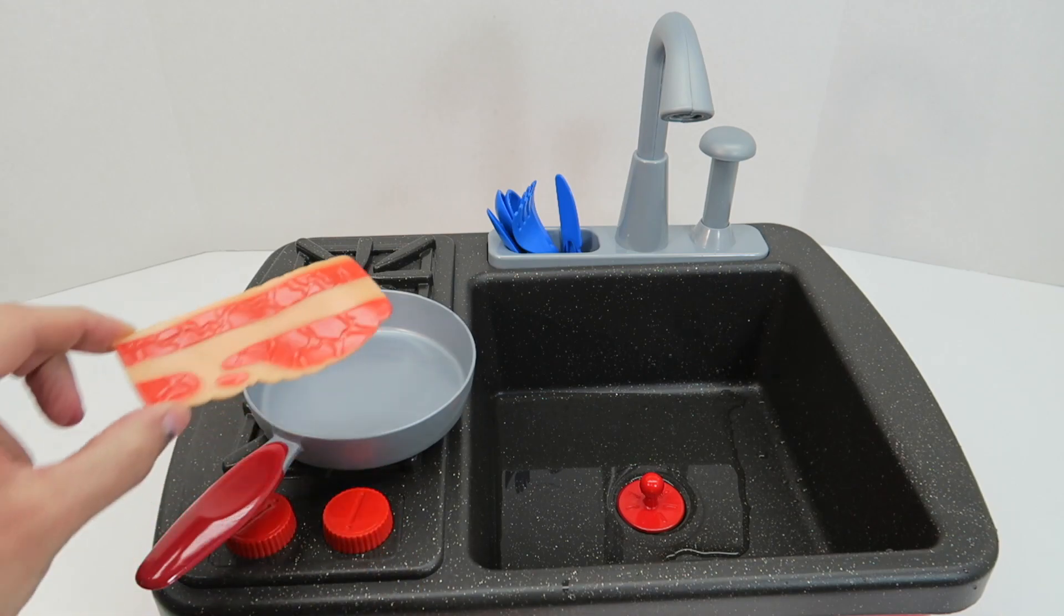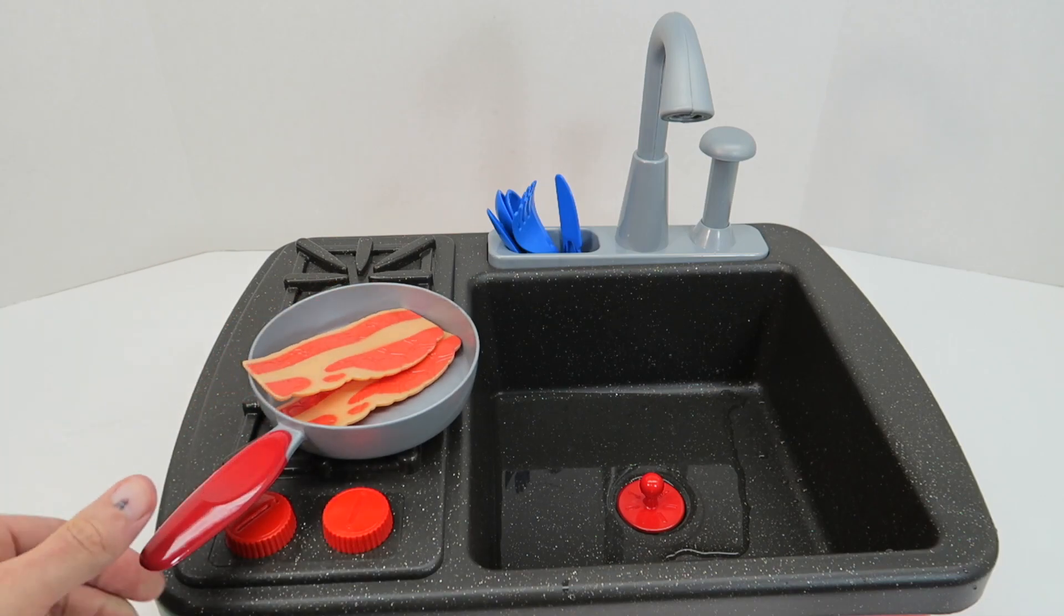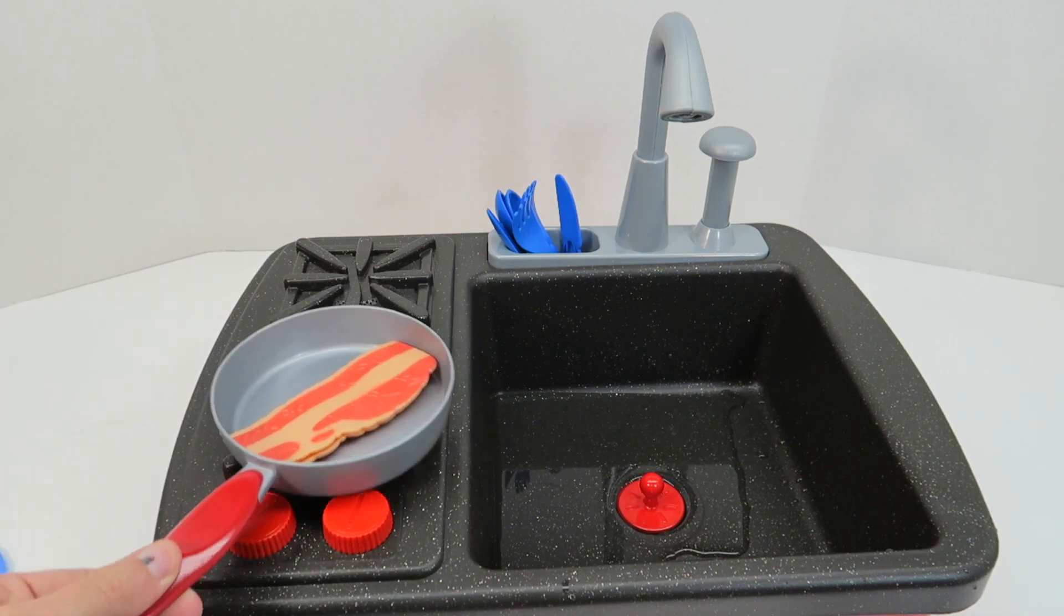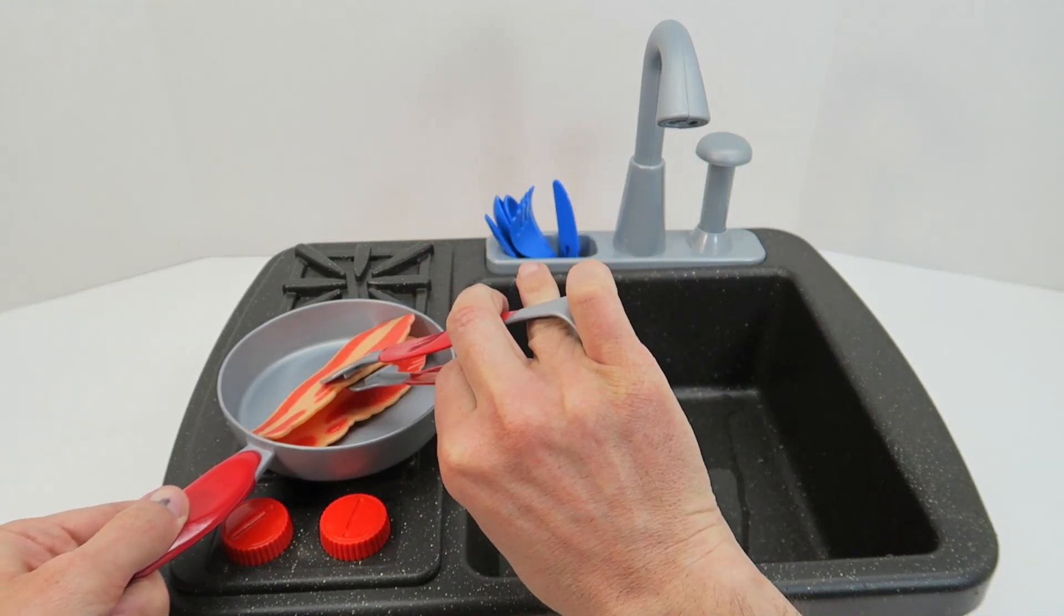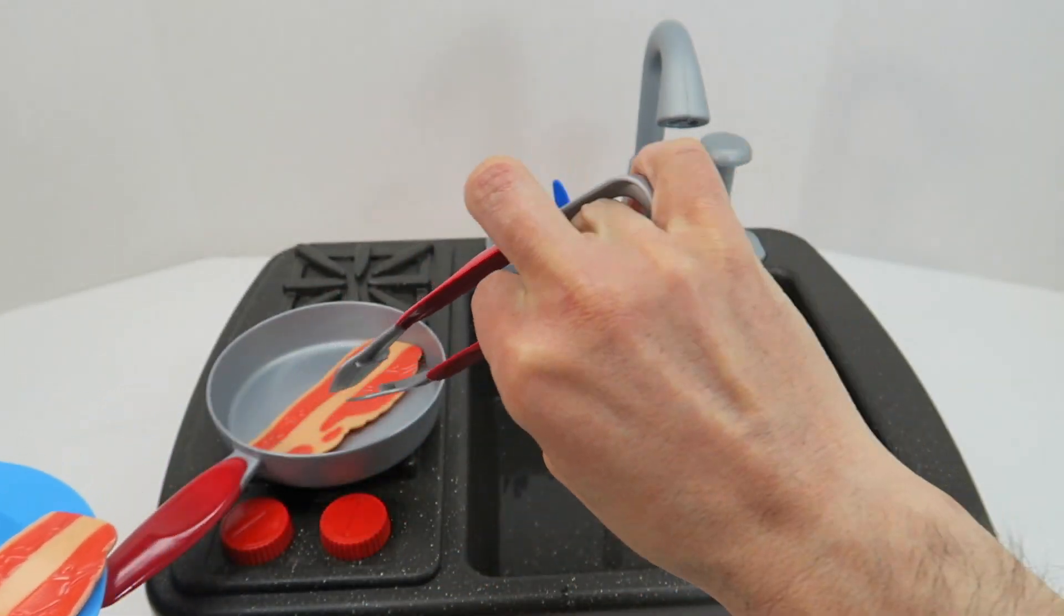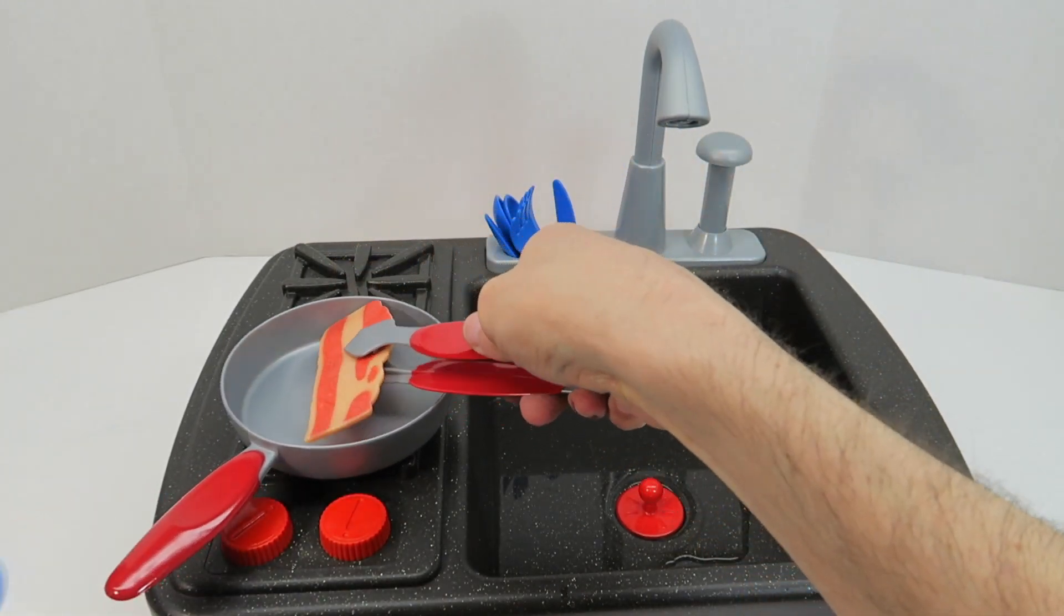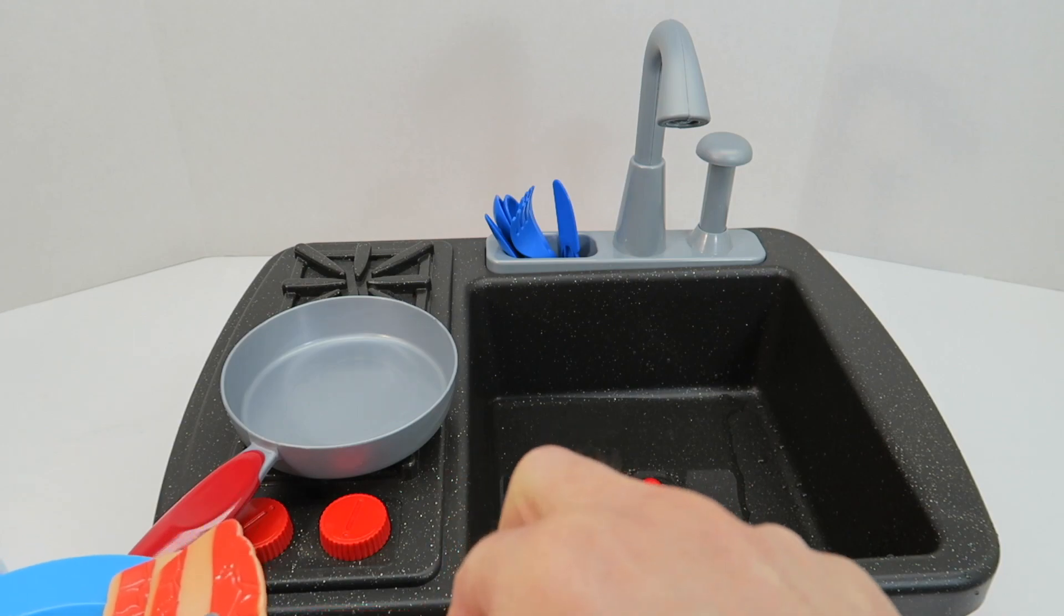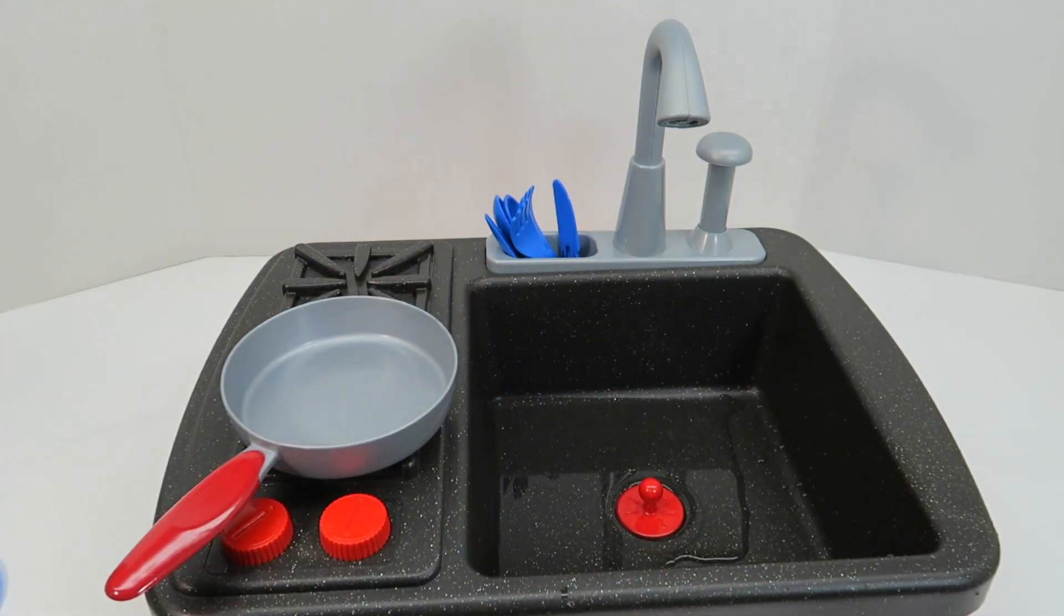So next, after that, let's have some bacon. So we'll put some bacon in the pan. Cook it out for a minute. Take the bacon out real carefully. Put it on our plate like that. Take our other piece of bacon. I'll put that on our plate just like that. So we have our bacon done. Okay, so we have our pancakes, our bacon.